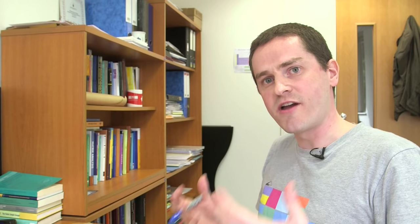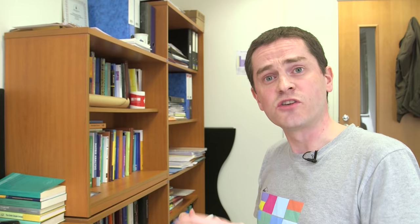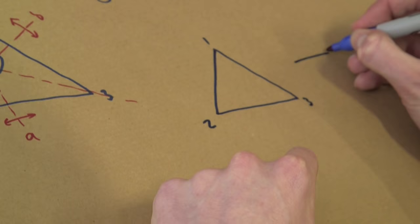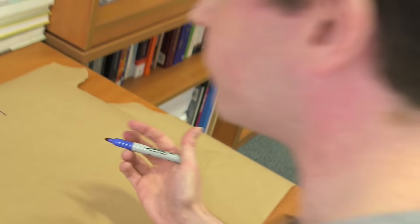The key concept with a group is it's more than just a collection of symmetries. There's a rule or there's an operation which allows us to combine two symmetries together. So if we take two symmetries, we could take the first one and combine it with the second, and that will give us a third symmetry of the triangle. How does that work? Let me give you an example. Let's draw this triangle out again.